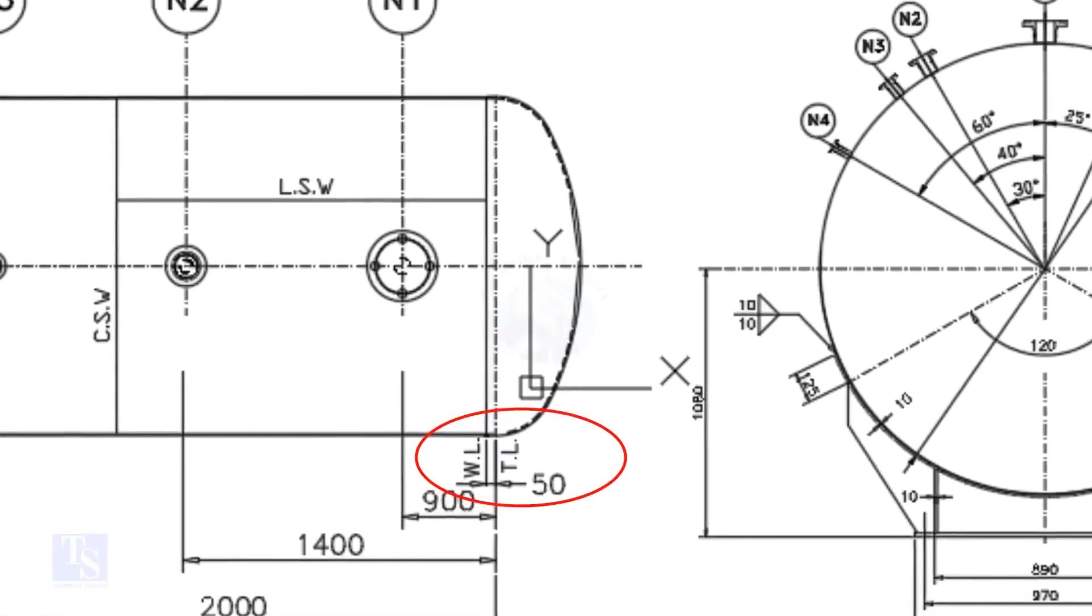What is TL and WL? TL stands for Tan Line and WL stands for Weld Line. The surface between the TL and the WL is called SF or Straight Face. Here, the straight face is 50mm.